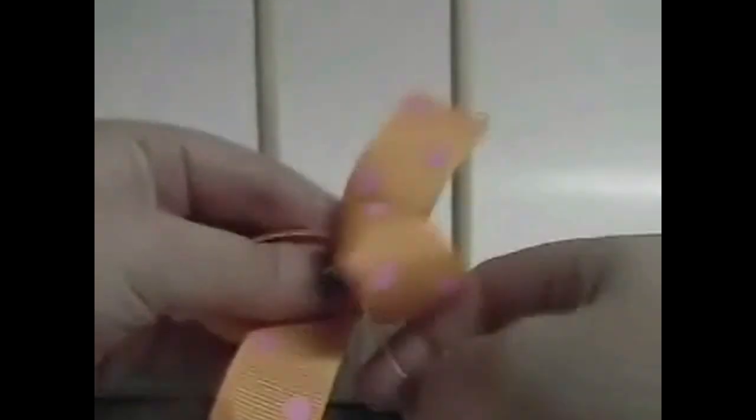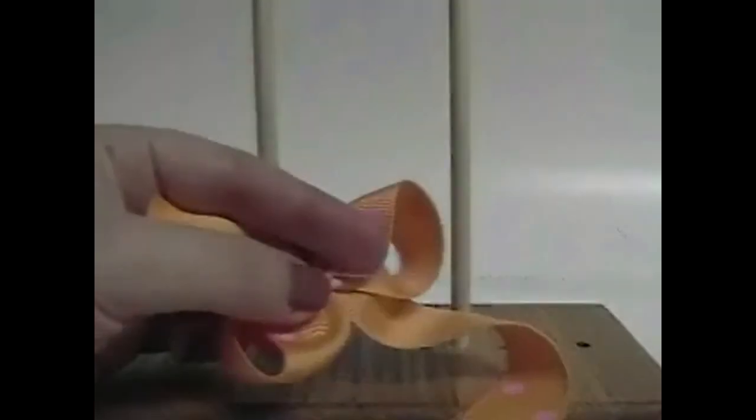Pull that thread real tight, take it around the center a couple more times, keep pulling it tight, and turn the bow over.